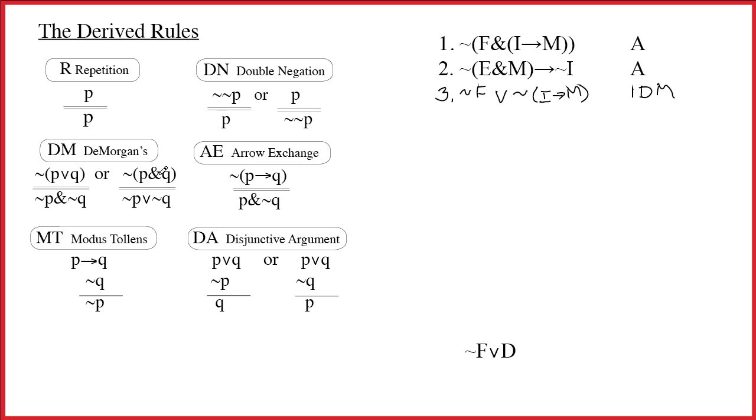The only time that you'd use DeMorgan's or arrow exchange is when the tilde is the only thing that's completely outside parentheses. In 2, the arrow's the main connective. When the arrow or the wedge are the main connective, that's really where all the difficulty comes about. There are two rules you have to think about for arrows. What are they? If you look at the useful chart, you'll see that the two rules are arrow out and modus tollens.